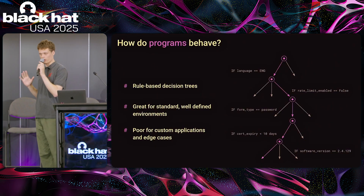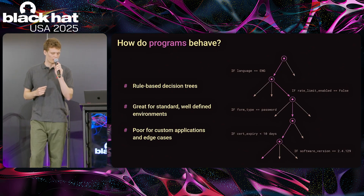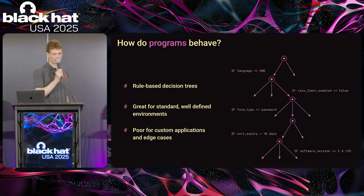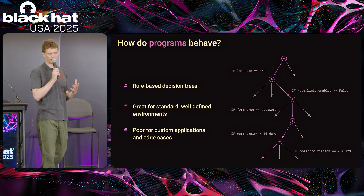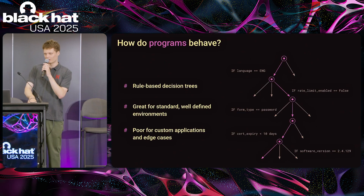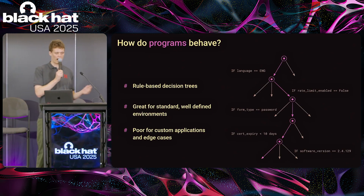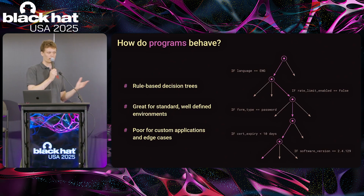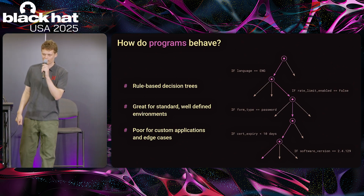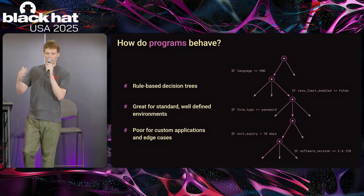To start off, I want to show how these typical tests work — how these programs behave. The behavior of these programs is based on decision trees that were programmed by engineers. For example, if I need to discover a password field, an engineer might program it to look for the word 'password.' But that will only work some of the time. What if this web application is in another language? We can also program in the word 'password' in other languages, but we're going to have more and more edge cases that accumulate over time. Since this is only one of 10,000 cases, we'll very quickly break down on those edge cases.